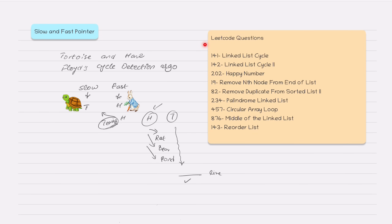These are some LeetCode questions I have mentioned here — their numbers and descriptions. There will be many others where these conditions are satisfied and you can implement this coding pattern to solve those questions. Let's see what this slow and fast coding pattern is all about.